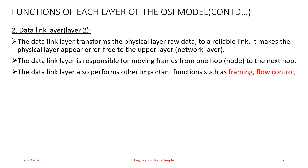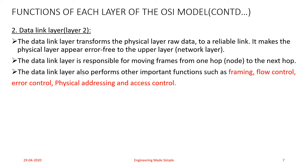The Data Link layer also performs other important functions such as framing, flow control, error control, physical addressing, and access control. We will learn what each of these terms means.